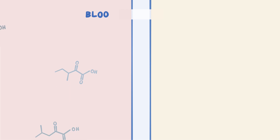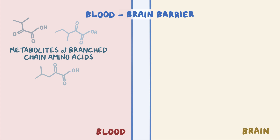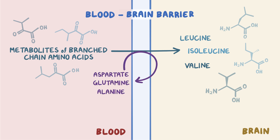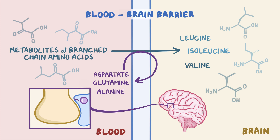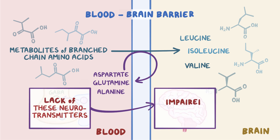Some of the metabolites of branched-chain amino acids can also cross over from the blood into the brain. Once they're in the brain, they're converted back into leucine, isoleucine, and valine. But this conversion process uses up other amino acids like aspartate, glutamine, and alanine. These amino acids are important for brain function and development, especially glutamine, because it's needed to synthesize the inhibitory neurotransmitter gamma-aminobutyric acid and the excitatory neurotransmitter glutamate. Lack of these two neurotransmitters impairs cell-to-cell communication.